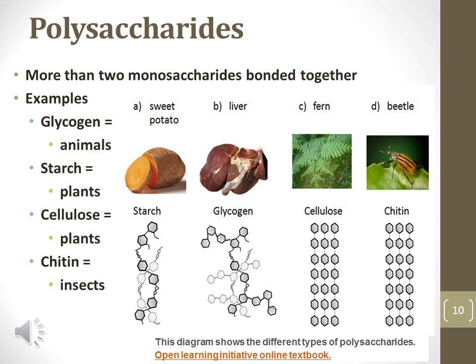Polysaccharides are long chains of carbohydrates and they can exist in a variety of forms. Starch is found in plants and can be broken down by humans for energy. Glycogen is the polysaccharide form that animals store as extra sugars. Cellulose is also found in plants but cannot be broken down by humans or many other animals. Chitin is a fourth type of polysaccharide found in the exoskeleton of insects and in fungi.